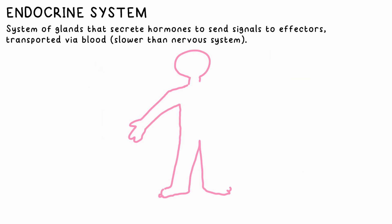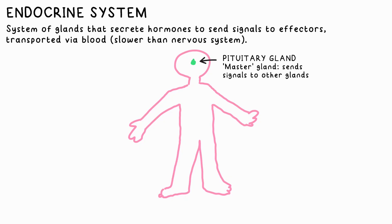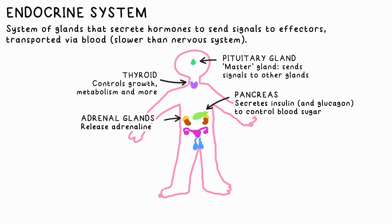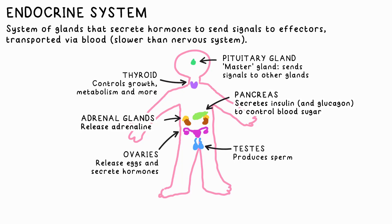The endocrine system is a system of glands that produce or secrete hormones that travel to effectors via the blood. This is of course slower than any signal carried by the nervous system. The pituitary gland in your brain can be considered the main or master gland, as it produces hormones in response to stimuli that travel to other glands to make them start producing certain chemicals. Examples are the pancreas, which produces insulin; the thyroid, which controls growth, heart, muscle and digestive function; the adrenal glands, which produce adrenaline; and the ovaries or testes, which release eggs or sperm.